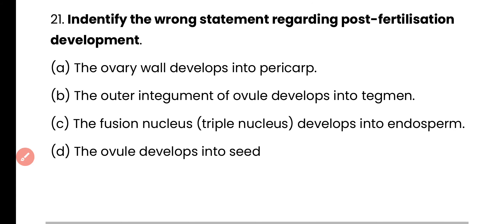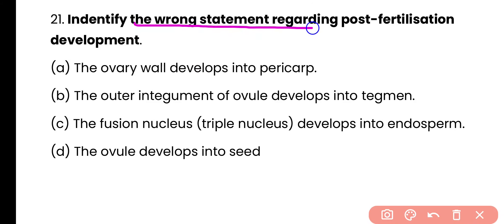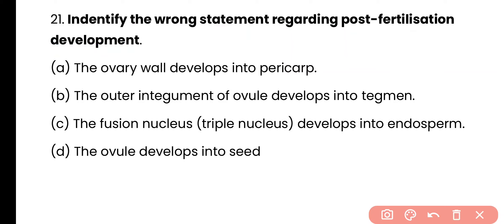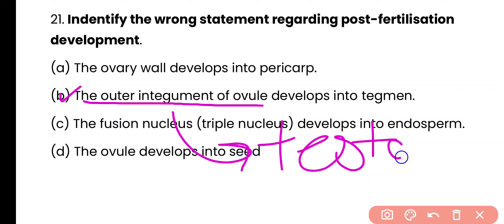Question number 21. Identify the wrong statement regarding post-fertilization development. Option A: ovary wall develops into pericarp. Option B: outer integument of the ovule develops into tegmen. Option C: the fusion nucleus develops into endosperm. Option D: ovule develops into seed. The wrong statement is option B, because the outer integument of the ovule develops into the testa, not the tegmen. The tegmen is the name given to the inner integument.